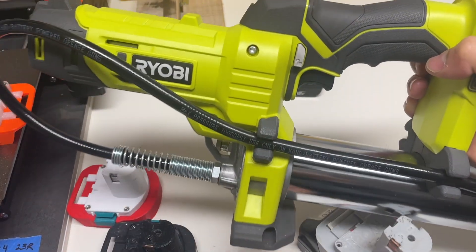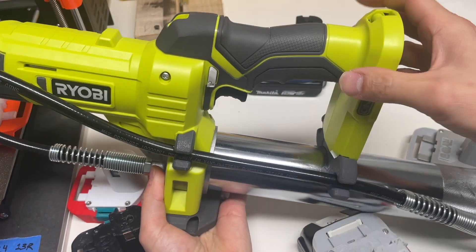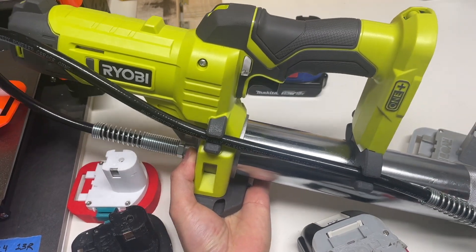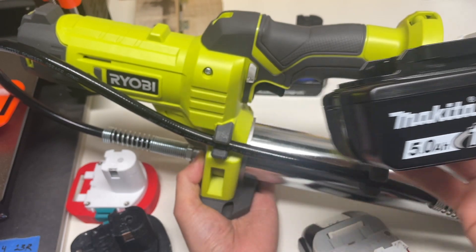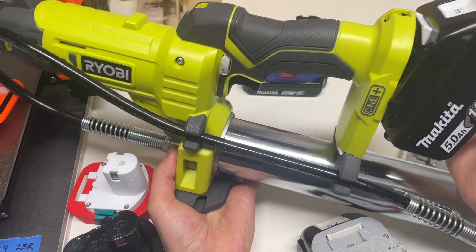So this is a Ryobi tool. It's an 18 volt grease gun. This is a Makita 18 volt battery and these don't seem to work well together.